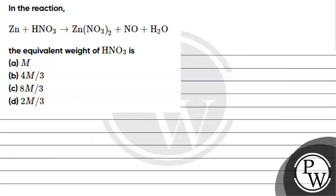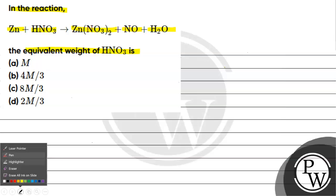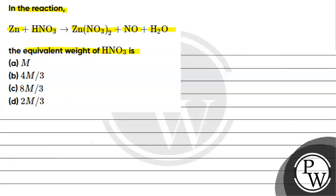Hello students, let's read this question. The question says: in the reaction zinc plus HNO3 gives zinc nitrate plus NO plus water, the equivalent weight of HNO3 is — option A: M, option B: 4M/3, option C: 8M/3, option D: 2M/3.